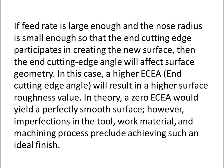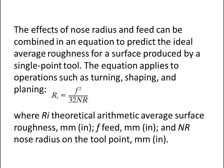In theory, a zero end cutting edge angle would yield a perfectly smooth surface. However, imperfections in the tool, work material, and machining process prevent achieving such an ideal finish. The effect of nose radius and feed can be combined in an equation to predict the ideal average roughness for a surface produced by a single point tool. The equation applies to operations such as turning, shaping, and planing.